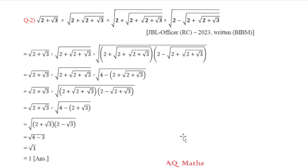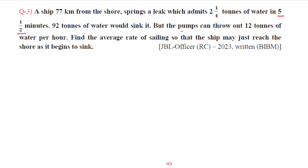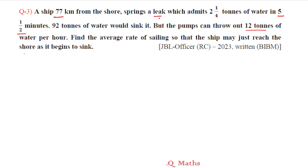Question number 3: A ship 77 kilometers from the shore springs a leak which admits 2 and 1/4 tons of water in 5 and 1/2 minutes. 92 tons of water would sink it, but the pumps can throw out 12 tons of water per hour. Find the average rate of sailing so that the ship may just reach the shore as it begins to sink.